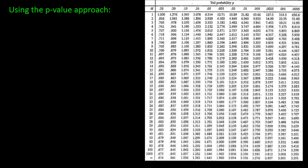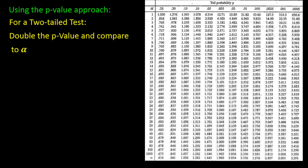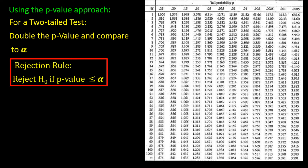We can also use the p-value approach to come to a statistical conclusion. For a two-tail test, we must double the p-value and compare it with alpha. The rule using the p-value approach for a two-tail test is to reject the null if the p-value is less than the alpha value. We are using an alpha value of 0.05 here, so any p-value less than 0.05, we would reject the null hypothesis.